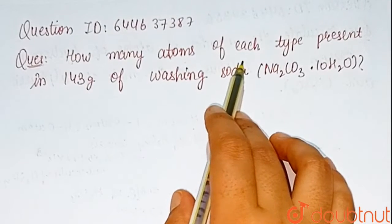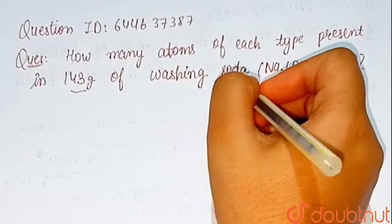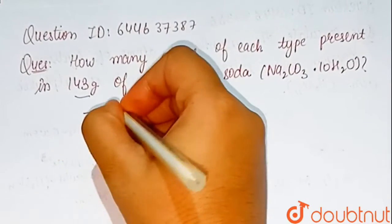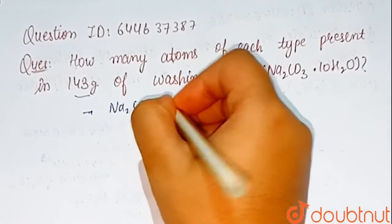Our question is, how many atoms of each type are present in 143 grams of washing soda? NA2CO3.10H2O.